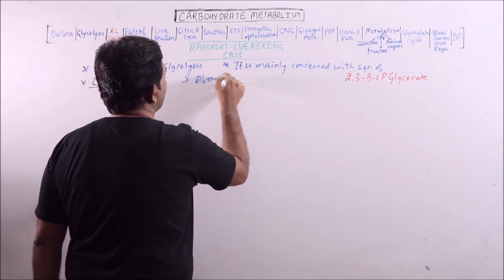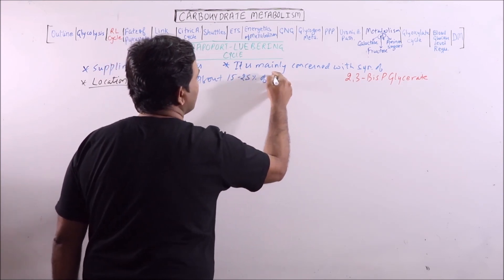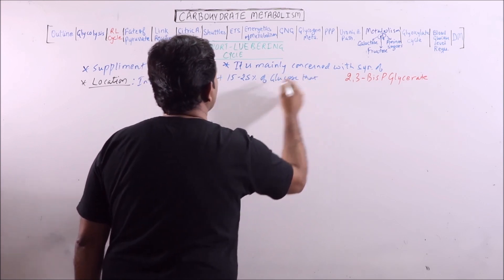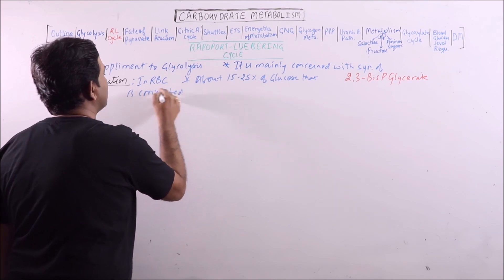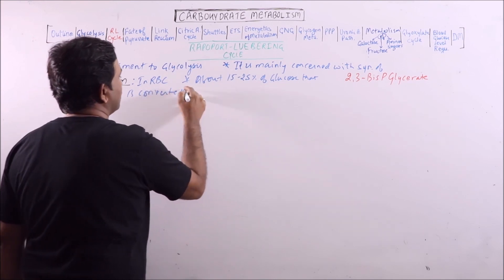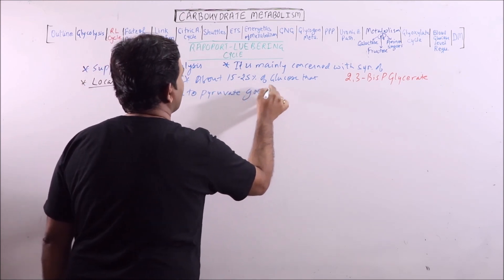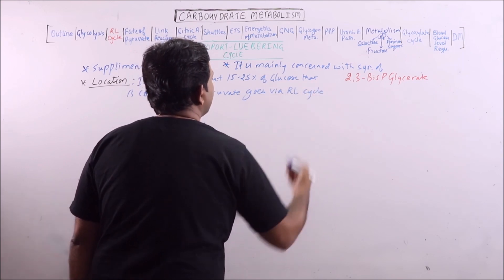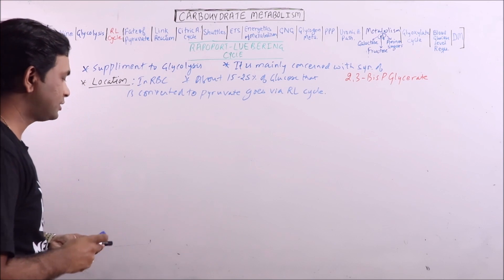It is important to note that about 15 to 25 percent of glucose that is converted to pyruvate goes via Rapaport-Lubring cycle. Now what are the various steps?